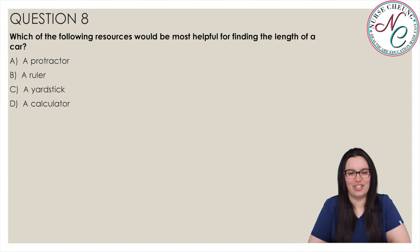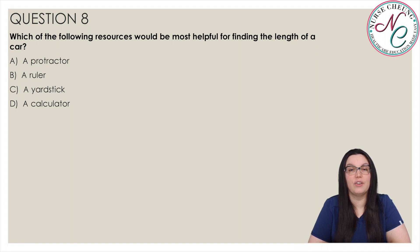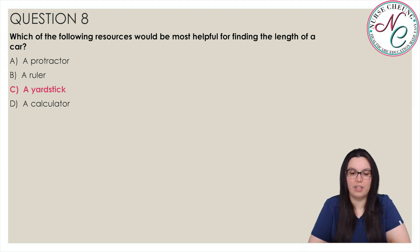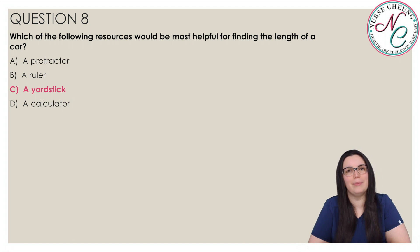Moving on to our last question: which of the following resources would be most helpful in finding the length of a car? The correct answer is C, a yardstick. A car can be best measured with a yardstick, which is 3 feet or 36 inches long. A ruler is too small at 12 inches, a calculator is used to calculate, and a protractor is used to measure angles.